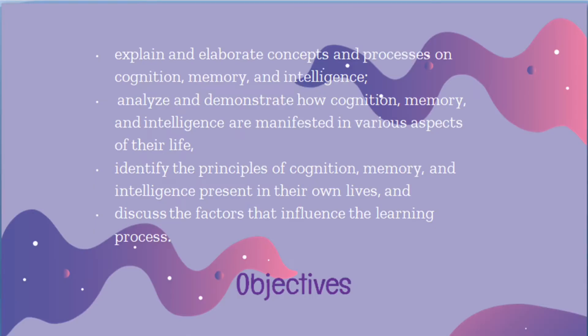We have four objectives for today's lesson. Number one, to explain and elaborate concepts and processes on cognition, memory, and intelligence. Number two, to analyze and demonstrate how cognition, memory, and intelligence are manifested in various aspects of their life. Number three, identify the principles of cognition, memory, and intelligence present in their own lives. And number four, discuss the factors that influence the learning process.